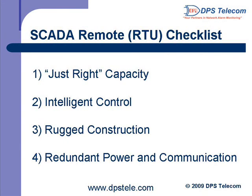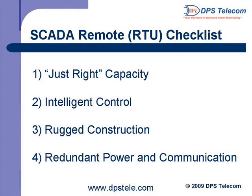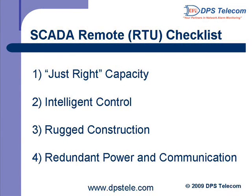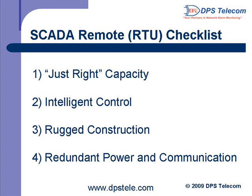Here's a checklist for evaluating SCADA remotes. Sufficient capacity: look for a remote that handles everything you plan to monitor now and leaves room for expansion, without paying for excess capacity you'll never use. Intelligent control: a remote with control relays and automation capabilities can save time by managing your SCADA system for you through programmed automatic responses. Rugged construction: a quality RTU should withstand extreme temperatures — look for a metal chassis and an industrial temperature rating. Redundancy in power and communications: look for dual power inputs or battery backup, and redundant communication paths so sensor data can be reported even if your primary transport goes down.